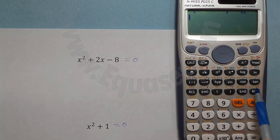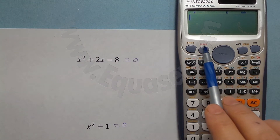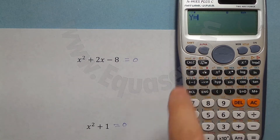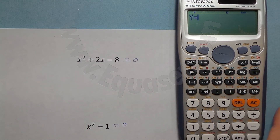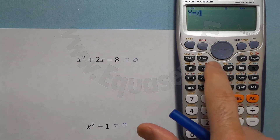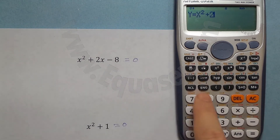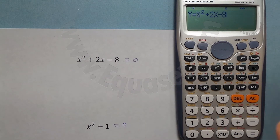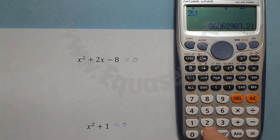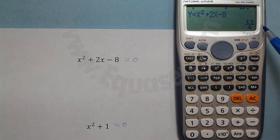Because the letters are red, we need to press the red button, which is Alpha. So Alpha Y, then Alpha equals to enter the equation. Now entering x squared: Alpha x squared, plus 2 Alpha x, minus 8. Once I enter my equation, press CALC — it's asking you for a value of x. Let's say 2.5, enter it and you get the value.